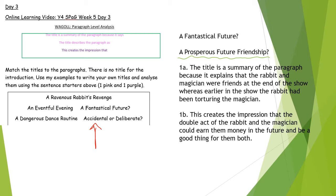So you can see my pink sentence underneath. The title is a summary of the paragraph because it explains that the rabbit and magician were friends at the end of the show, whereas earlier in the show the rabbit had been torturing the magician. Basically, my 1a is explaining my noun, my friendship. It's explaining why friendship is useful in that paragraph and why therefore it's good in the title. Why is it relevant is basically the question.